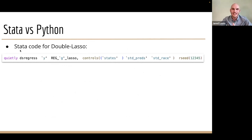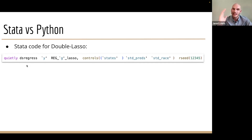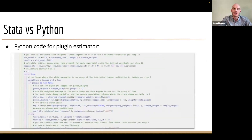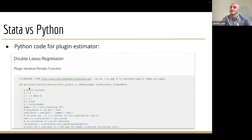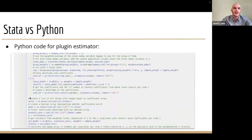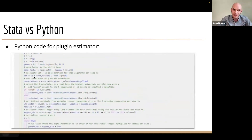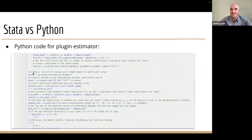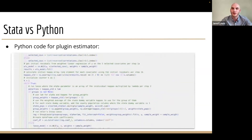Just to show how amazing Stata is for statistical analysis versus Python — and also to show the fun we got to have building out lower-level implementations in Python — this single line right here takes care of double lasso in Stata: it has state fixed effects, groups them together, and has the plug-in iterative penalty estimator all built into one line of code. On the next slide, you can see our Python code just for our plug-in estimator — this is just one part of our lasso regression. It took quite a bit more work, but we were able to understand what's going on under the hood much better.